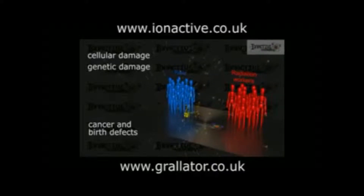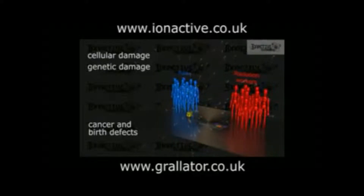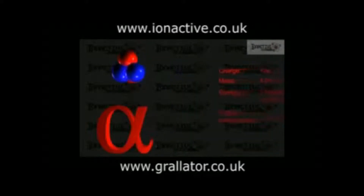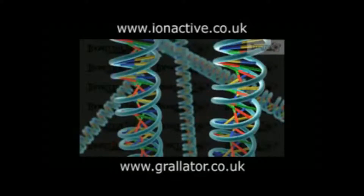These effects are not only dependent upon the energy deposited by the radiation, but also by the type of radiation depositing the energy. For example, alpha radiation is highly ionising due to its double charge, and because it is relatively easily slowed down, it deposits its energy over a short distance. Because of this, it is 20 times more damaging per grey of absorbed dose than gamma radiation, as a gamma photon deposits far less energy per unit length of travel.